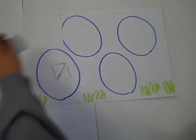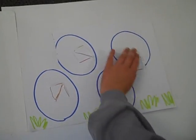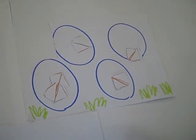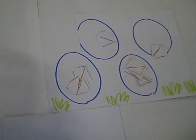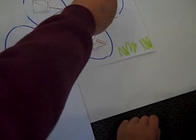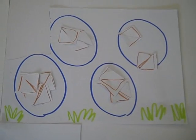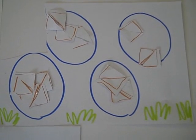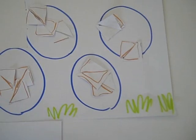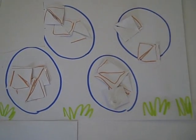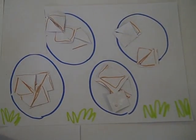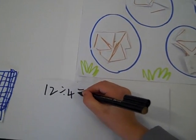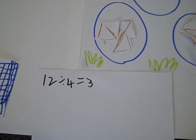One, one, one, one. Two, two, two. Three, four, five, six, seven, eight, nine, ten, eleven, twelve. Twelve divided by 4 equals 3.